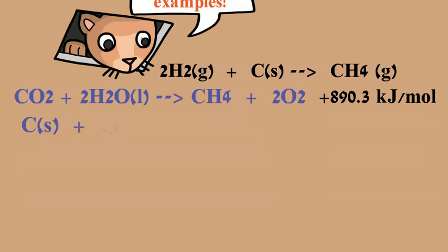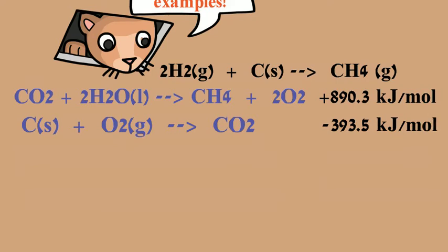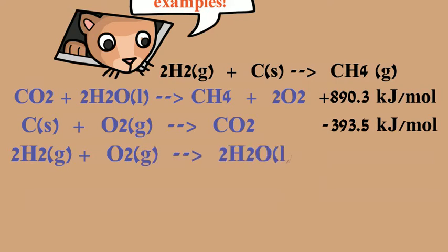Using the elementals, we have C plus O2 yields CO2. And looking up this, negative 393.5 kilojoules per mole. 2H2 plus O2 yields 2H2O. And the delta H of formation for this is, you can pause at any time, negative 571.7 kilojoules per mole.